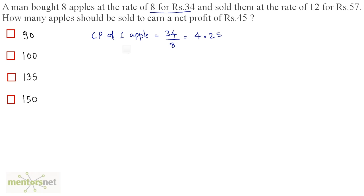Now we have the cost price of 1 apple. We have also been given the selling price of 12 apples — sold at the rate of 12 for 57 rupees. So selling price of 1 apple equals selling price of 12 apples divided by 12, so 57 divided by 12, which comes out as 4.75.